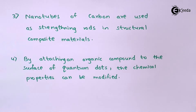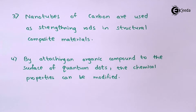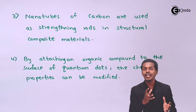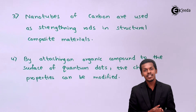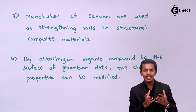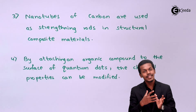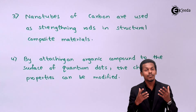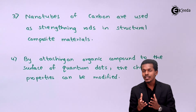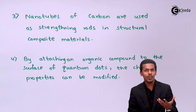By attaching an organic compound to the surface of a quantum dot — which is essentially a semiconductor nanomaterial — the chemical properties can be modified. This has very wide applications nowadays and could be used in the future as well. Specifically, the property of DNA can be utilized with the help of a quantum dot, and we can modify the chemical reactivity or bond attachment of the DNA with the quantum dot, modifying most of its properties.